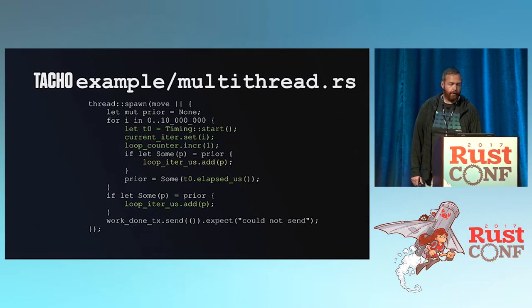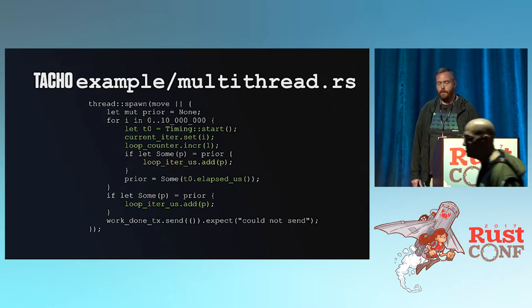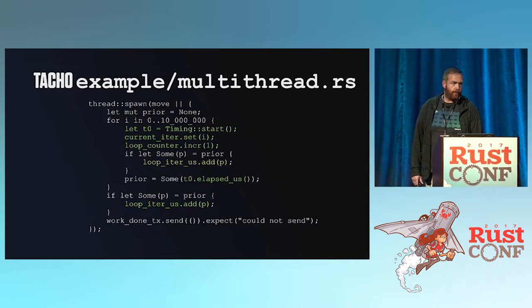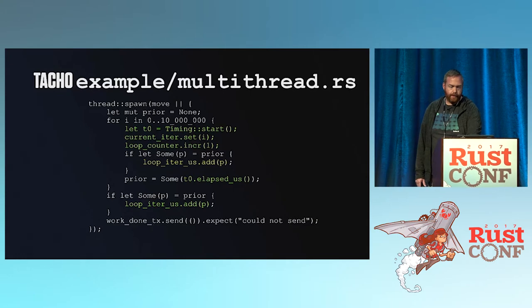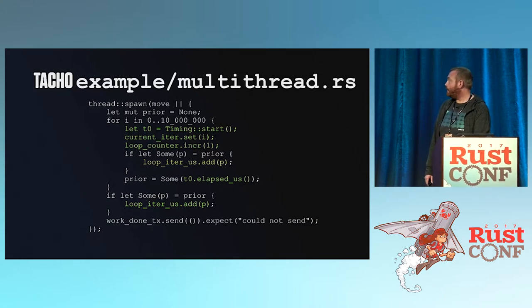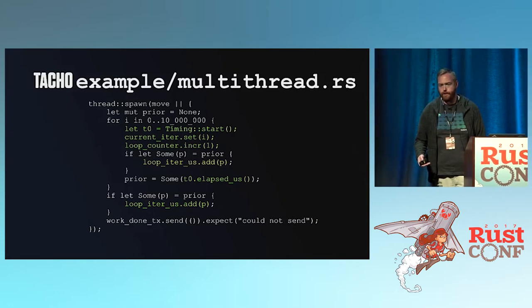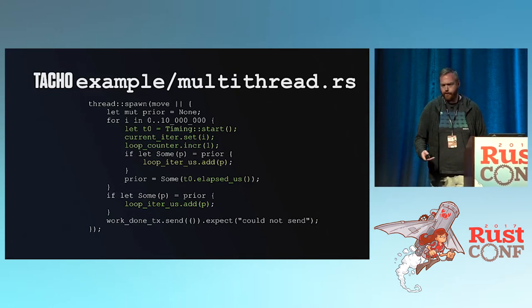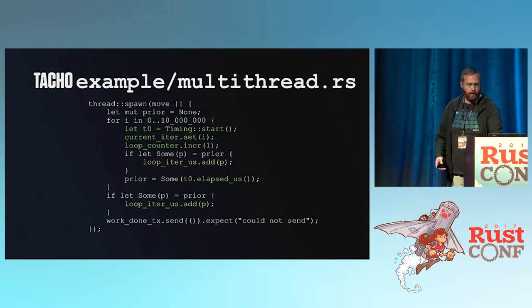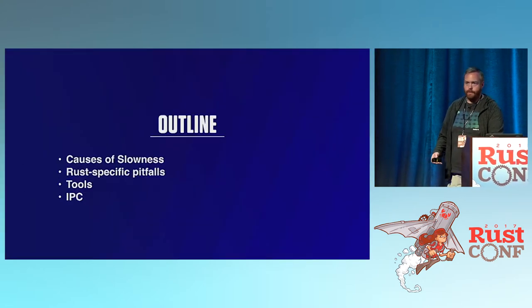Here is a macro benchmark that I wrote — I'll talk about what macro benchmarks are in a second. This is a multi-threaded macro benchmark where you can see we have a timing that measures how long it takes to do an action. We have a loop of about 10 million times inside of a single program, this benchmark driver called multithread.rs. We set the current iteration, increment a counter — that's the basic work — and at the end we send a signal to a channel that says we're done.